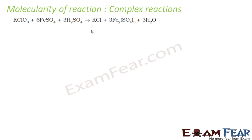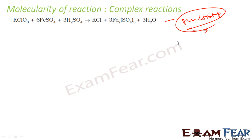For a complex reaction, it takes place in more than one step — these are multi-steps. Each step will be a simple or elementary reaction, and molecularity is only for simple reactions. If you want to find the molecularity of a complex reaction, find all the steps. For each step you will have a molecularity, and the slowest step will give you the order of the reaction.